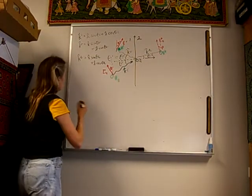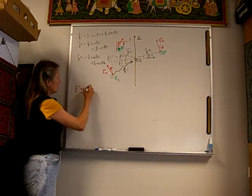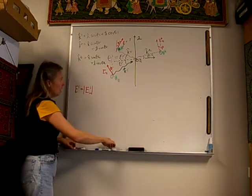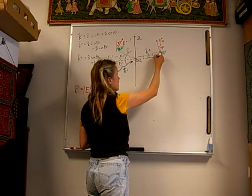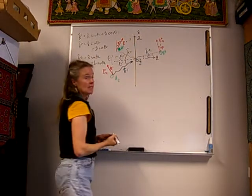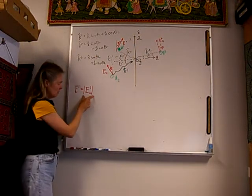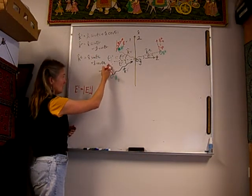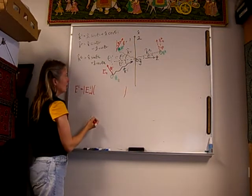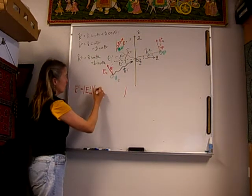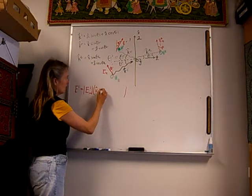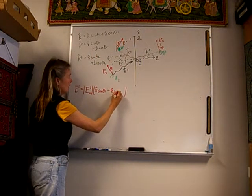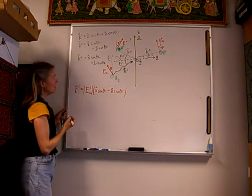Now let's write our vectors. The incident electric field vector is going to be E incident, which we'll assume is given as the magnitude. It is in the x and z direction — z axis, x axis, and the y axis is out of the board. The polarization has an x component that is positive and equals cosine of theta i, and a z component that is negative and equals sine of theta i.